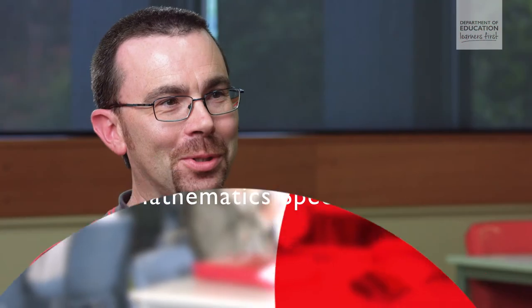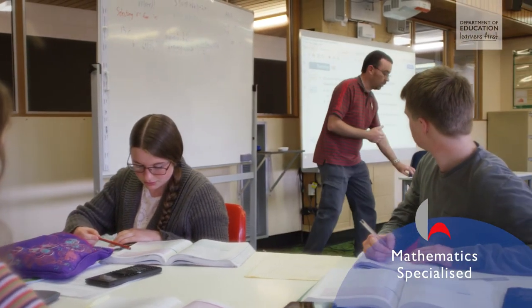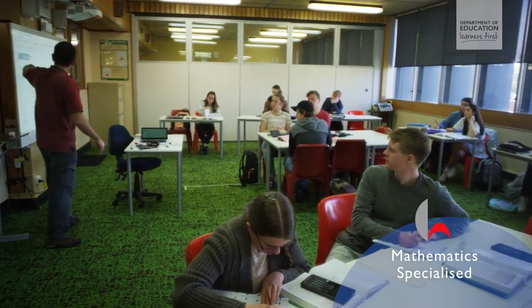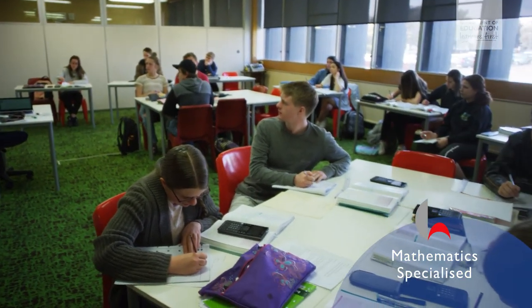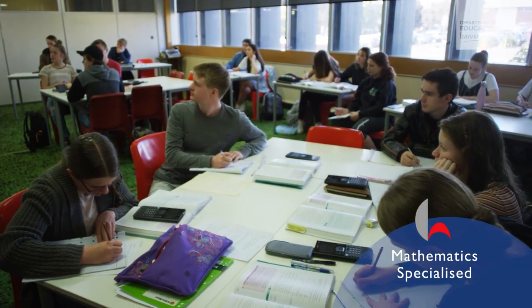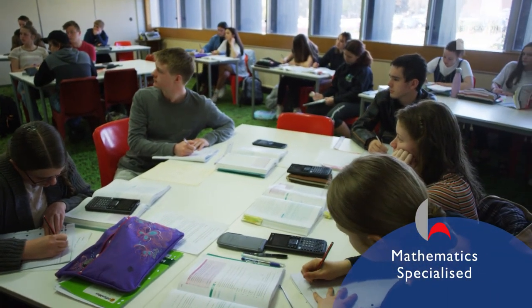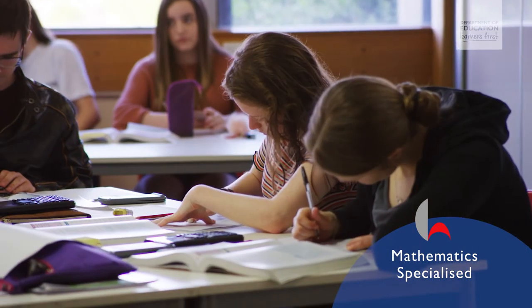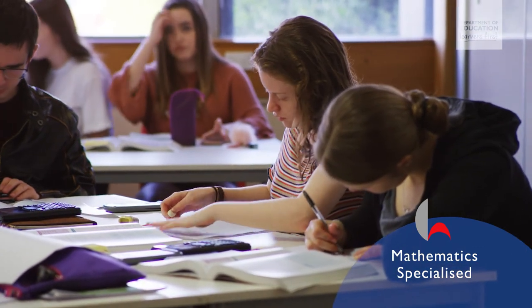We also have another course called Math Specialised which is a continuation of the Math Methods 4 course and that really gives students an introduction to the first year university maths and that's really useful if you're going to use maths at university. I did Methods 3 and Methods 4 in Year 10 and 11 and so it leads on to the next level of maths I suppose and it prepares me for uni where I want to study engineering. There are a few challenging techniques we've learnt I suppose but you know we practice them and get lots of help.